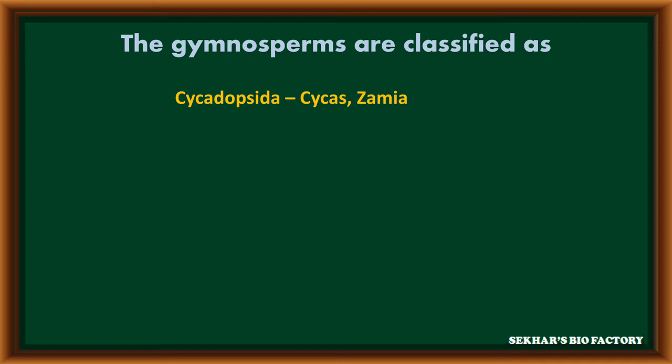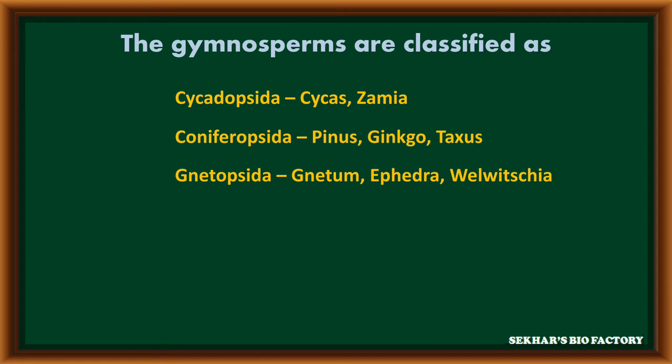The first group is Cycadopsida, e.g. Cycas and Zamia. The second group is Coniferopsida, e.g. Pinus, Ginkgo and Taxus. The third group is Gnetopsida, e.g. Gnetum, Ephedra and Welwitschia.